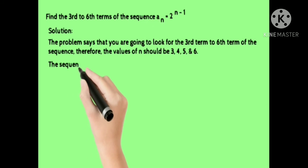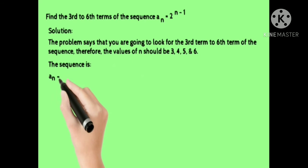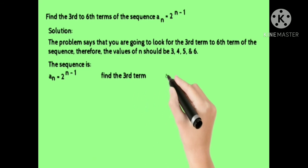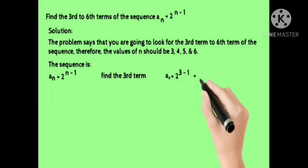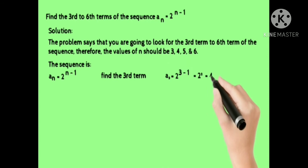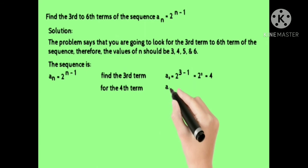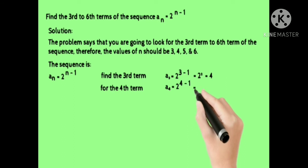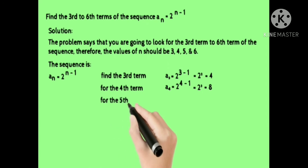For the third term, plug in 3: a sub 3 is equal to 2 raised to 3 minus 1, which equals 2 squared. 2 squared is equal to 4. For the fourth term, plug in 4: a sub 4 is equal to 2 raised to 4 minus 1, which equals 2 cubed. 2 cubed is equal to 8.